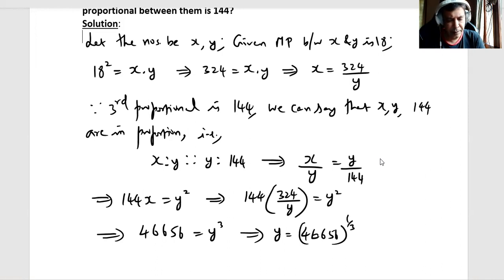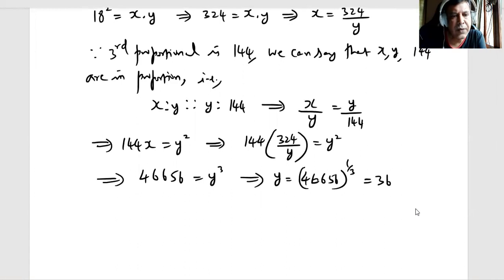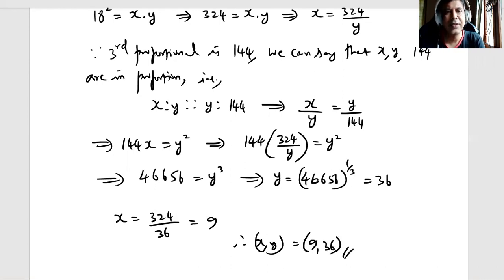Cube root of 46,656 will be 36, the y value. Now that we got y value, our x will be 324 divided by y, that means 324 by 36, we get 9. Therefore x, y is 9, 36, that is the answer.